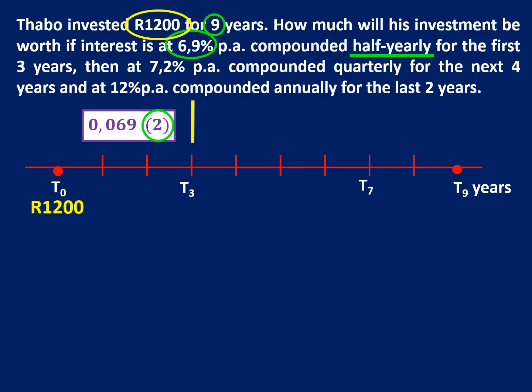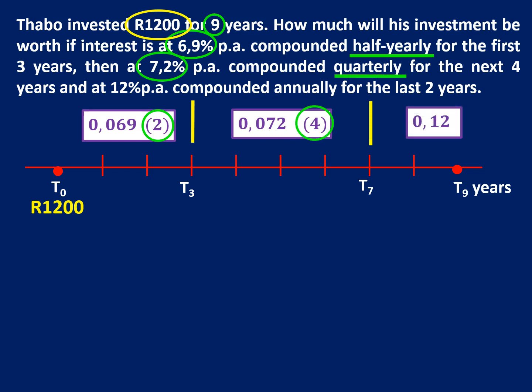For the next portion on the timeline 7.2% divided by 100 is 0.072. It's happening quarterly so four times. And the last one is just an annual compounding of 0.12 or 12%.